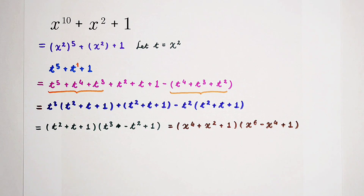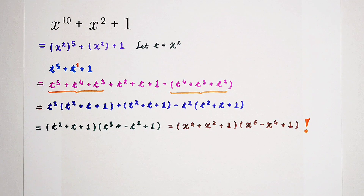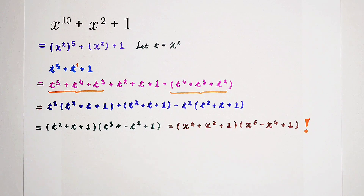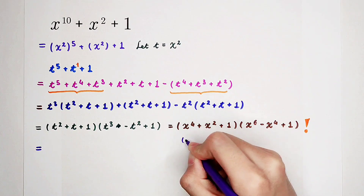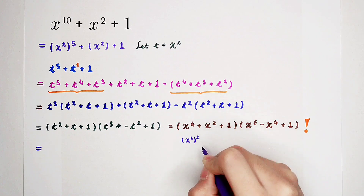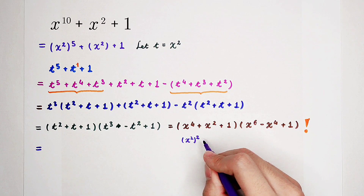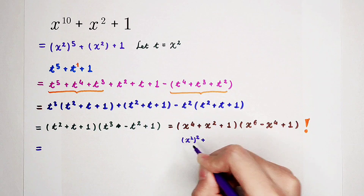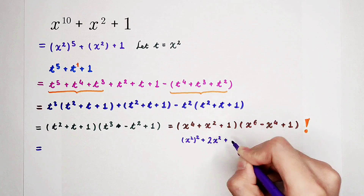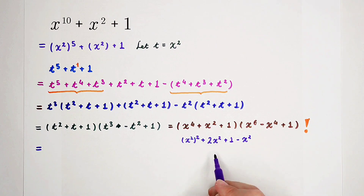Have we finished? Of course not. Pay attention — x to the power of 4 plus x squared plus 1 can be factorized further. Since x to the power of 4 can be written as (x squared) squared, and we have a 1, we can use the binomial formula: (a plus b) squared equals a squared plus b squared plus 2ab. Here we only lack 2ab, where a is x squared and b is 1. So if we add 2x squared and then subtract x squared, we get (x squared plus 1) squared minus x squared.